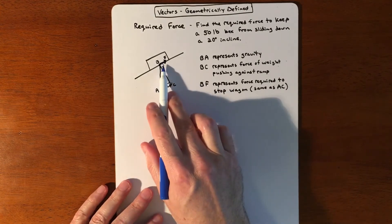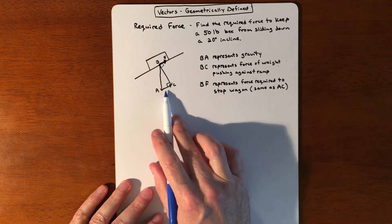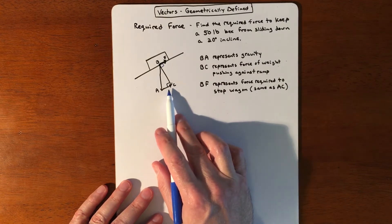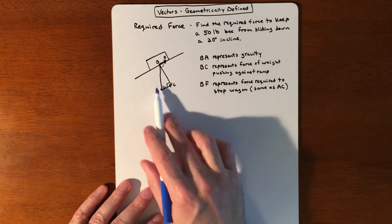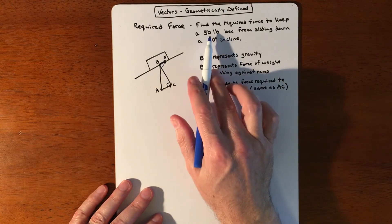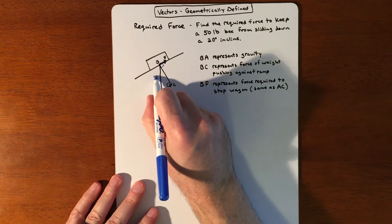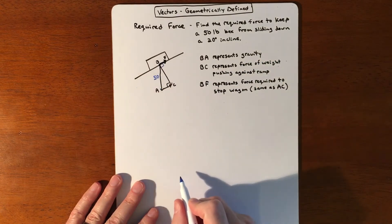BF is actually the same as AC. The reason we talk about that is because this is the triangle we're going to work with. It tells you that you have a 50-pound box—that's gravity pulling it down—so we can label that as 50.